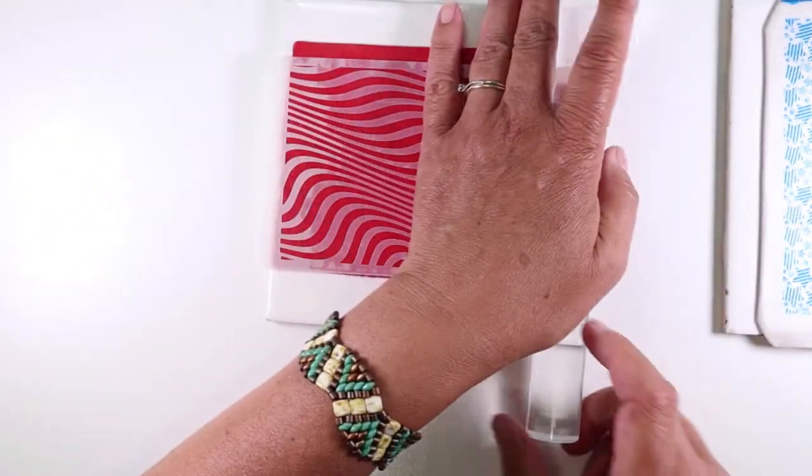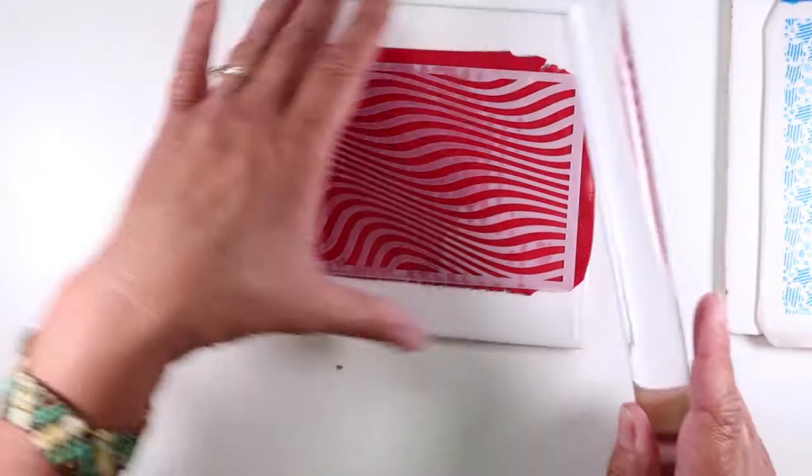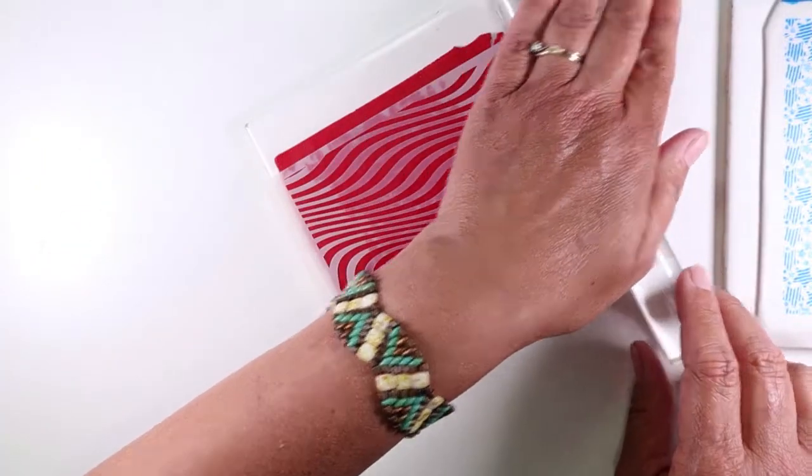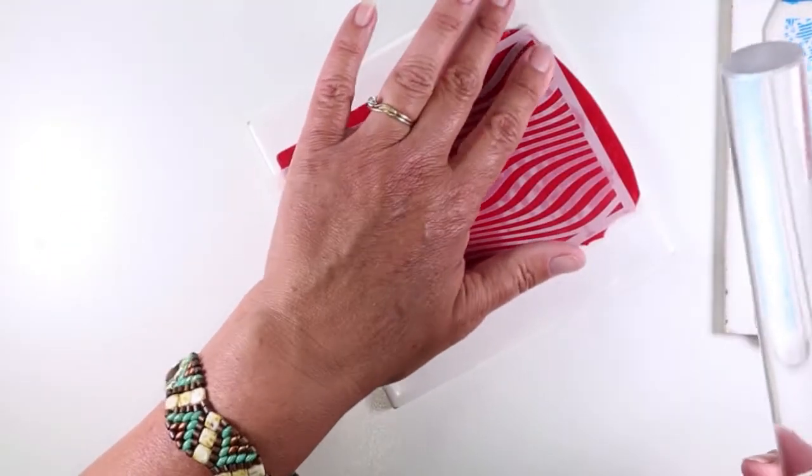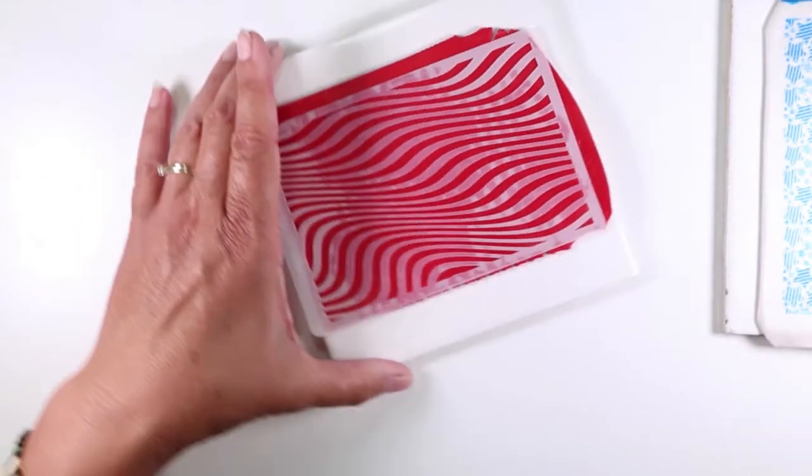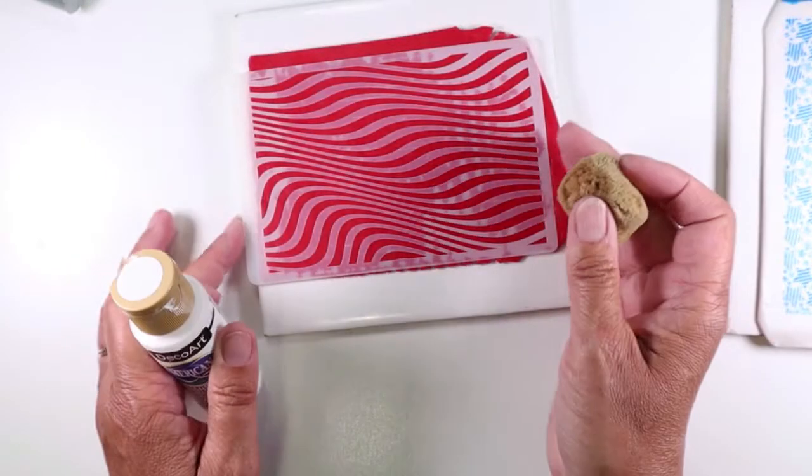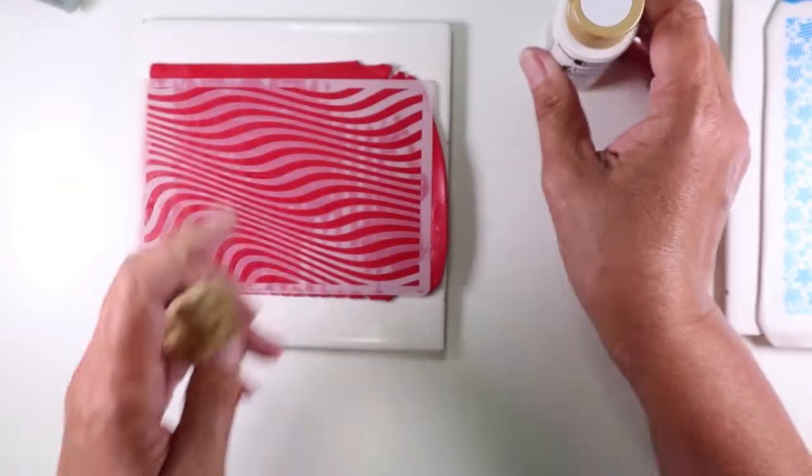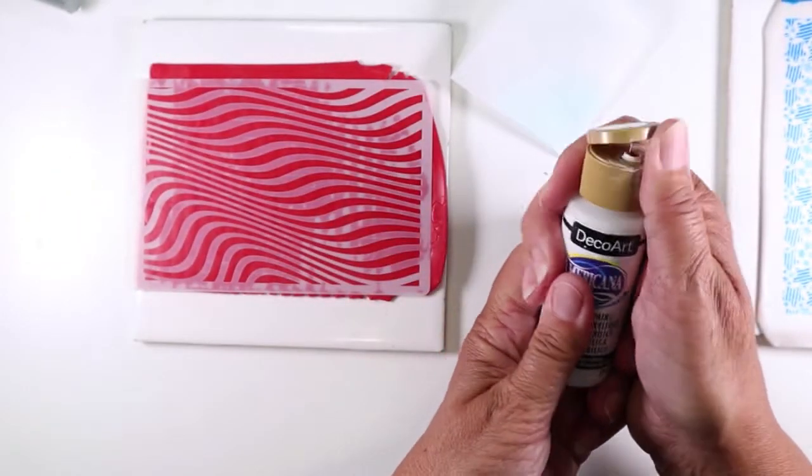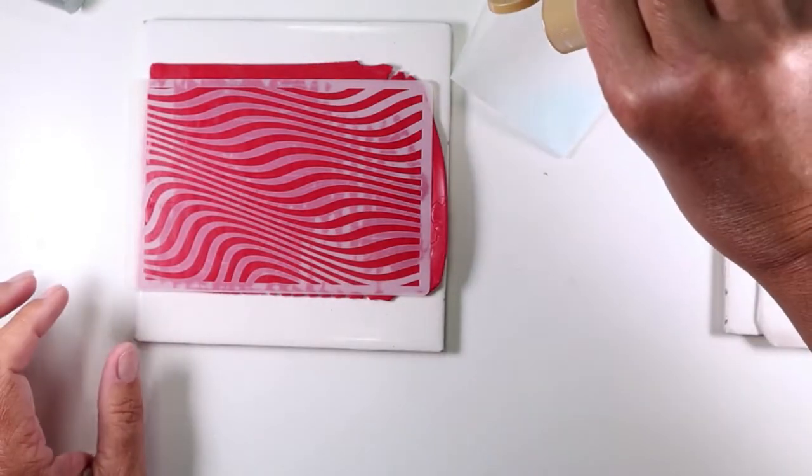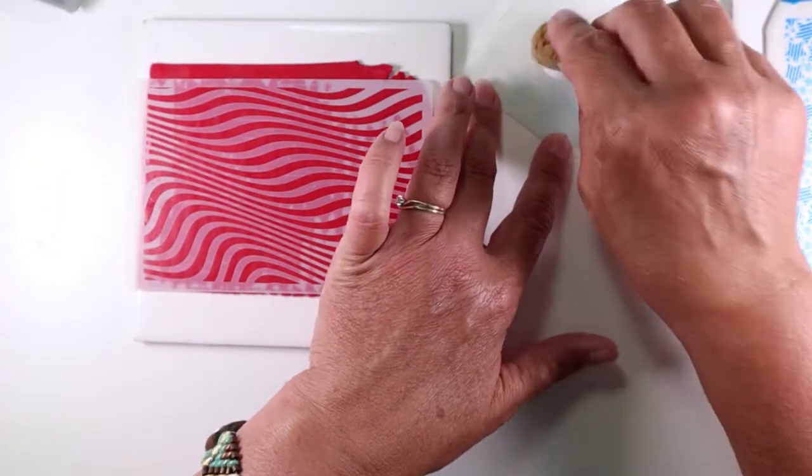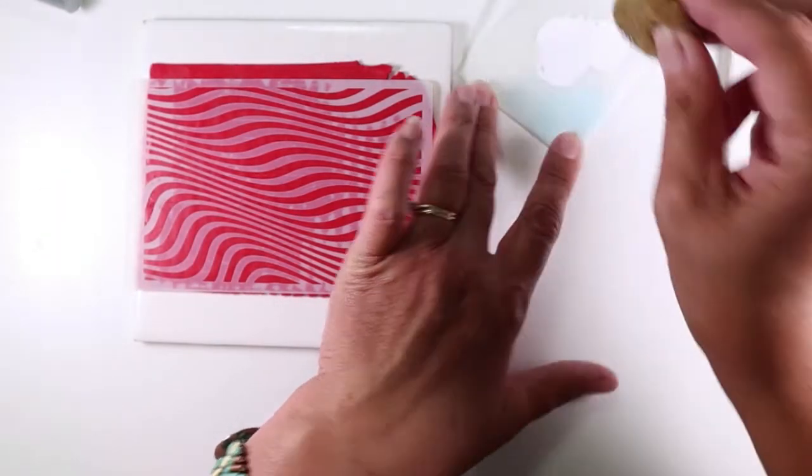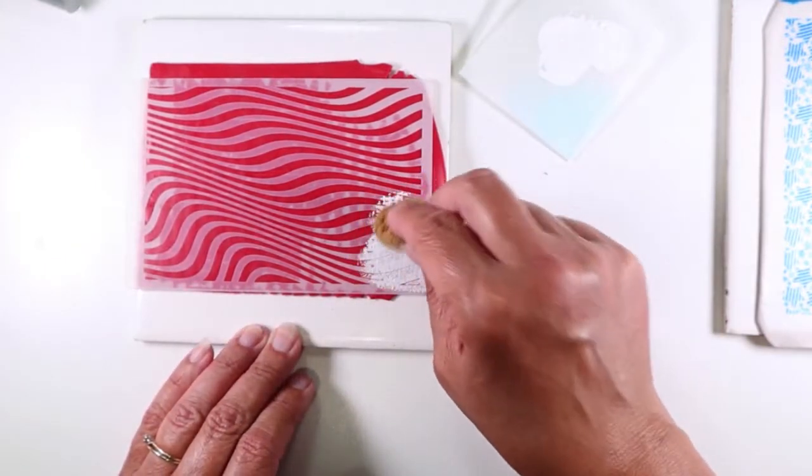Again lightly roll over with your acrylic roller just so that it's stuck down and paint isn't going to seep underneath and I have a little bit of sea sponge. I've just moistened this in some water and wrung it out and a bit of white paint. You could brush on paint you could do whatever you want but I kind of like the look here of the sponged on paint.